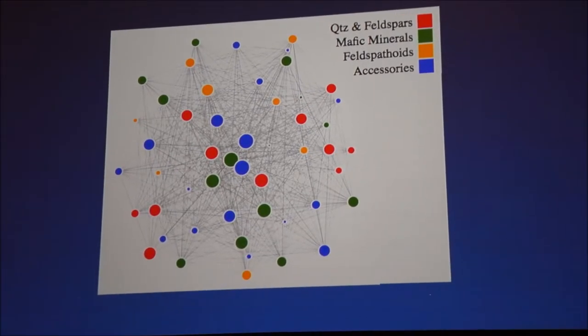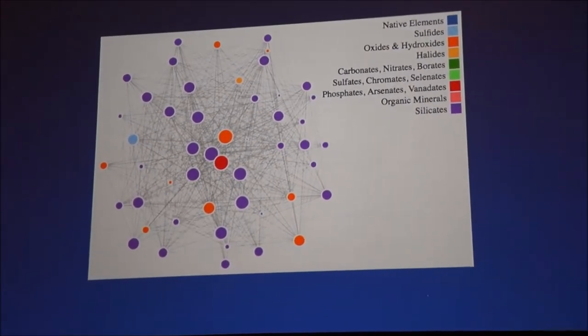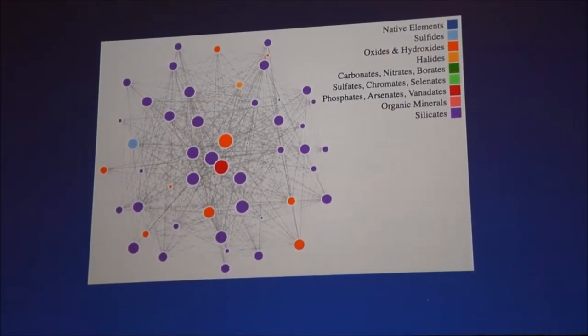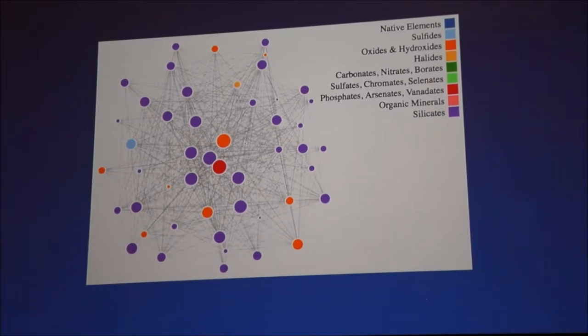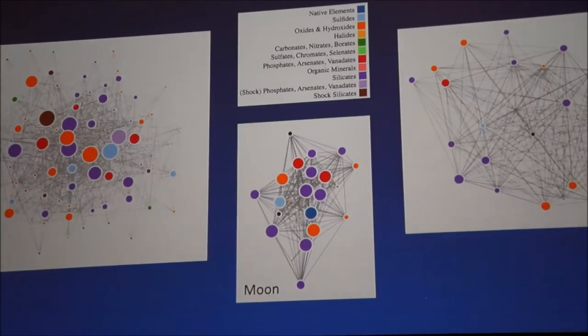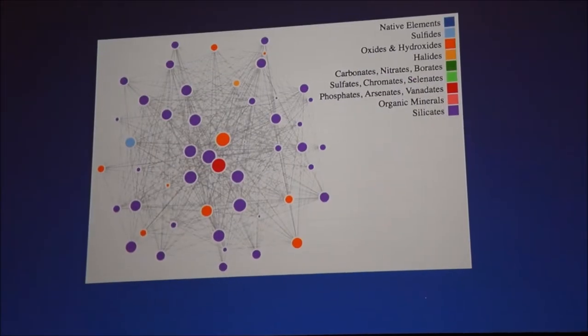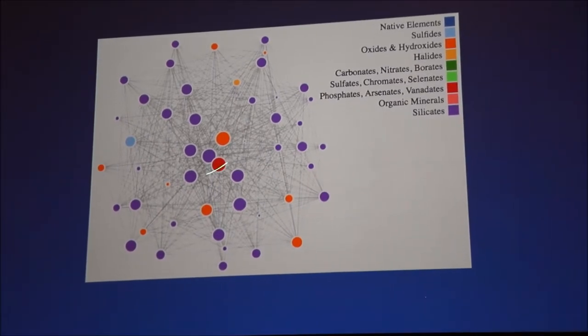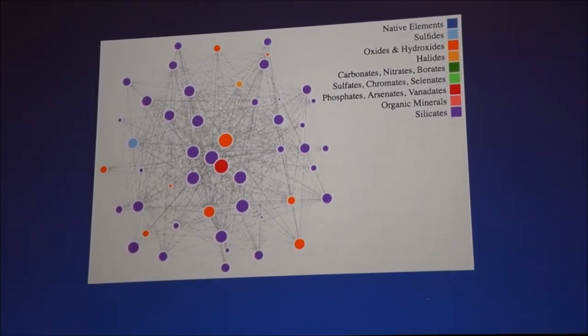So say I wanted to look at a slightly different chemistry, I could do the Dana classification. That's what we're seeing here, which is a chemical classification essentially. And we'll see that there are a lot of silicates in these purple ones and the igneous rocks on Earth, which is what we would expect.